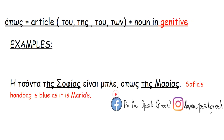Now the genitive case, which is less common with όπως. For example: Η τσάντα της Σοφίας είναι μπλε όπως της Μαρίας. The genitive expresses possession — η τσάντα της Σοφίας means 'Sophia's bag'. In the second part, όπως της Μαρίας, the word τσάντα is implied, so the genitive is used after όπως.